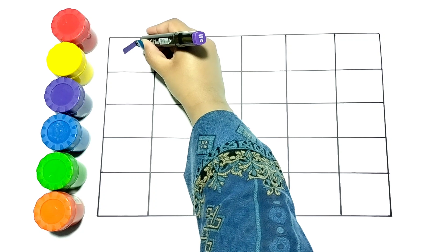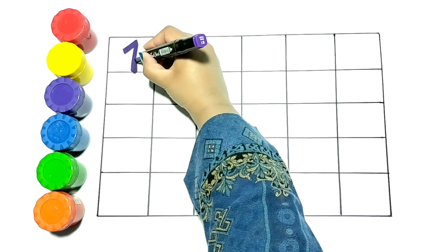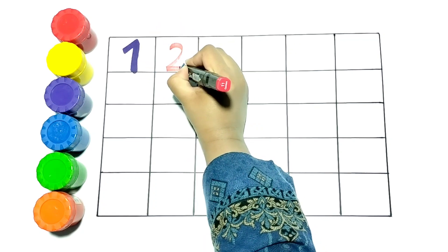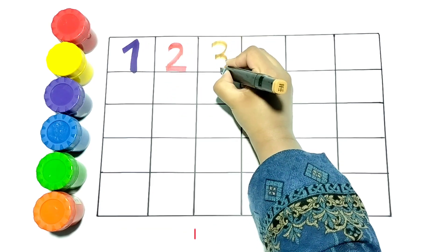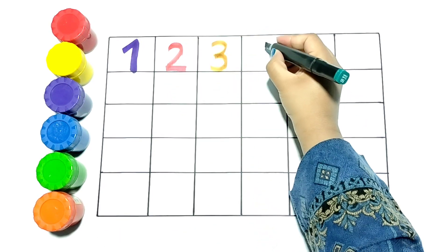Let's write 1. I am writing 1 with purple color. Let's write 2. I am writing it with red color. Now I am writing 3. It is in orange color.